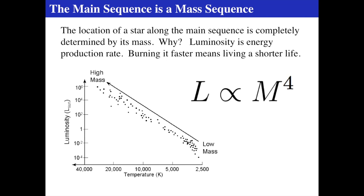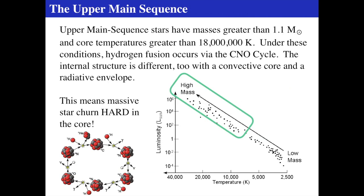Since the main sequence is a mass sequence, the location of a star on it is completely determined by its mass. The luminosity is the energy production rate — how much energy the star must produce. If it's more luminous, it burns its fuel faster, and therefore has a shorter life. There's not a huge range of masses — from roughly 1% to 100 times the mass of the Sun — yet the luminosity is incredibly different from low-mass to high-mass stars.